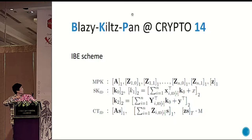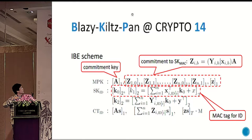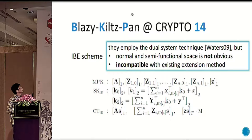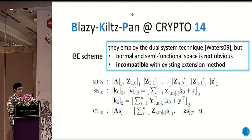The secret key consists of a MAC tag for the ID, and X which is the secret key for the MAC committed in the scheme. Another part of the secret key is a proof showing that this is a legal tag. Although they use the dual system technique, there is a problem: the normal and semi-functional spaces are not quite obvious. So we don't know how to employ existing extension methods to extend this scheme to the multi-challenge setting.